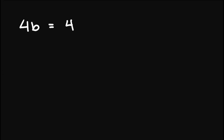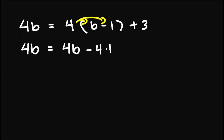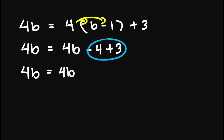How about this one? Let's have 4b equals 4 times b minus 1 plus 3. Again, we can't move anything yet since we still need to simplify this one out here. So simplifying, we distribute the 4 to obtain 4b minus 4 plus 3. Simplifying this part, we obtain 4b equals 4b minus 1.